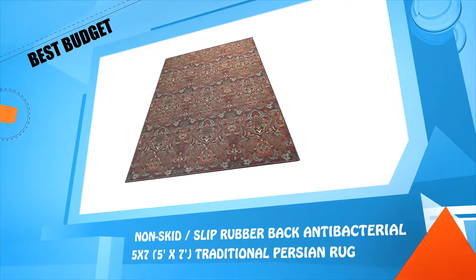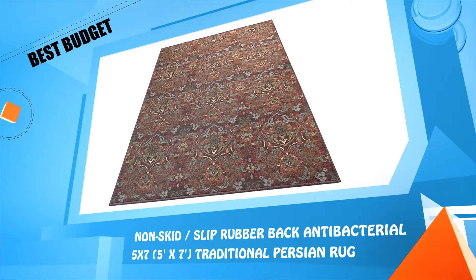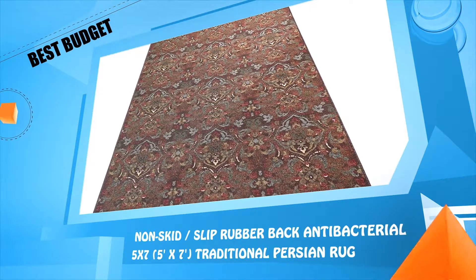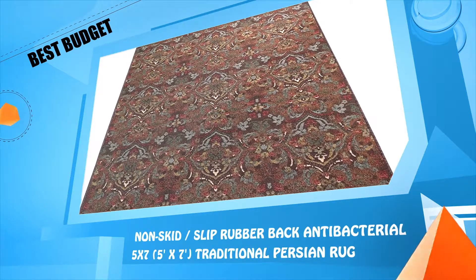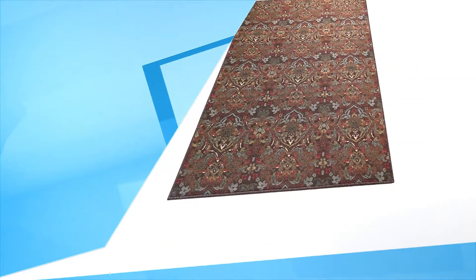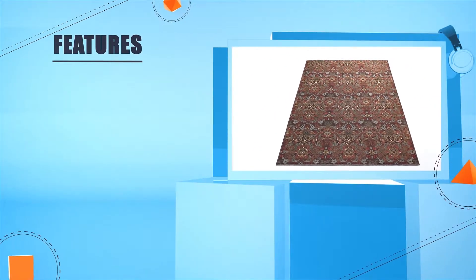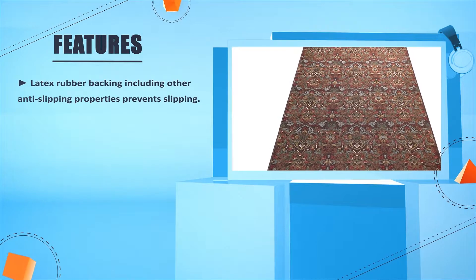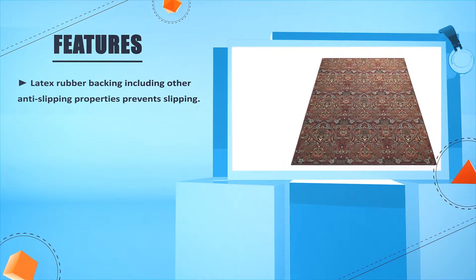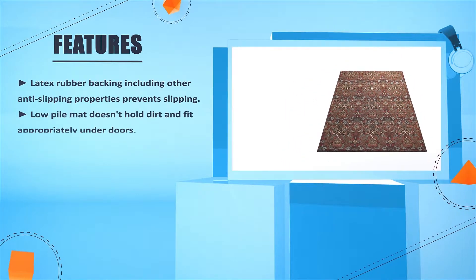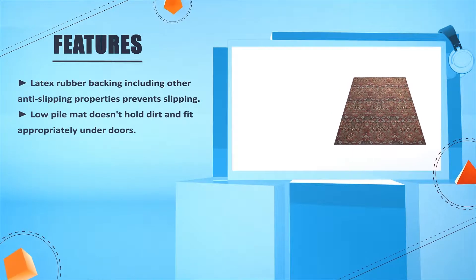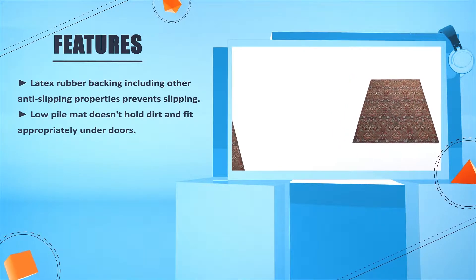Number four: Non-skid or slip rubber back and antibacterial 5 feet 2 inches by 7 feet, traditional Persian rug. Latex rubber backing including other anti-slipping properties prevent slipping. Low pile mat doesn't hold dirt and fits appropriately under doors.